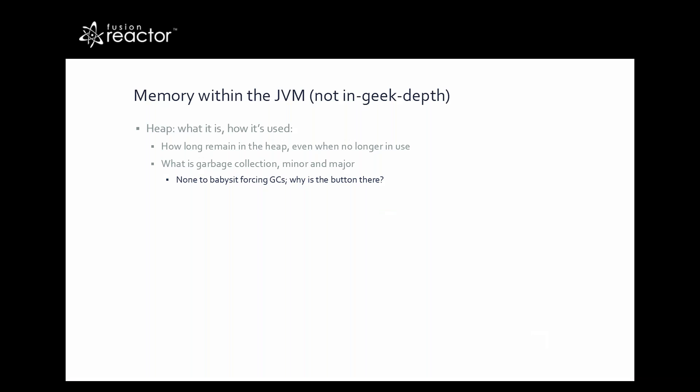The heap is divided into generations. Traditionally there's an eden space, a survivor space, and an old generation. The eden space is where recently created objects live. If the JVM decides an object has lived long enough it moves it to the survivor space, and after it's lived even longer it moves it to the old generation. These are rough generalizations — the exact names depend on the garbage collection algorithm — but the point is different-length-lived objects live in different spaces.